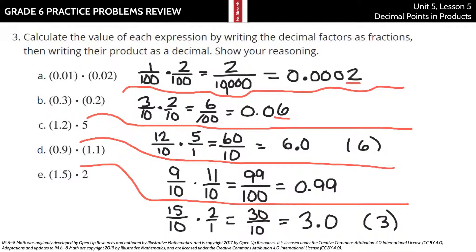One and five-tenths is the same thing as fifteen-tenths times two. Thirty-tenths, which is the same thing as, well, that's thirty-tenths right there, but we normally just call it three.